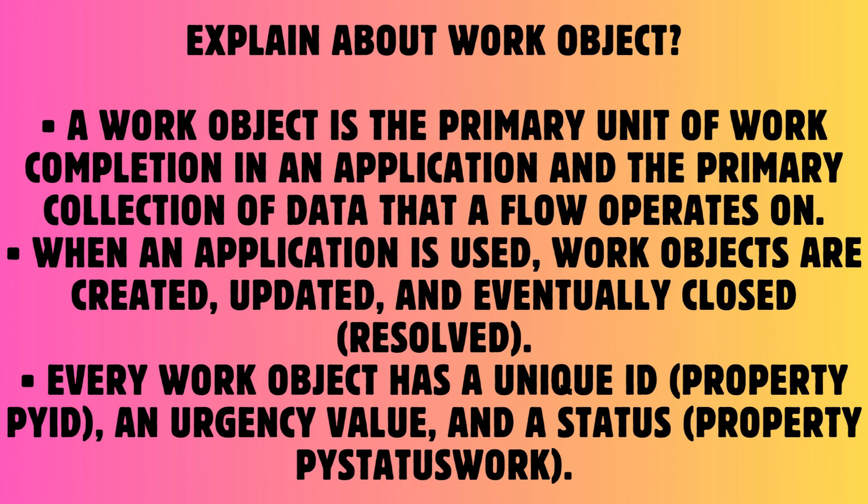Question: Explain about work object. Answer: A work object is the primary unit of work completion in an application and the primary collection of data that a flow operates on. When an application is used, work objects are created, updated, and eventually closed or resolved. Every work object has a unique ID, property pyID, an urgency value, and a status — property pyStatusWork.